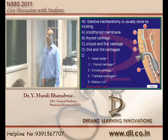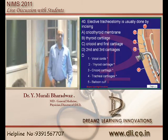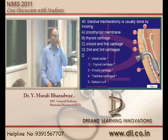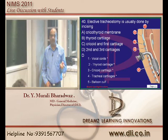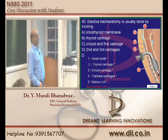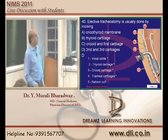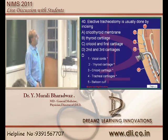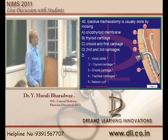Where will you do a tracheostomy? Many questions come on types and complications of tracheostomy. The tracheostomy is performed between the second and third tracheal rings. The structures present are: vocal cords, thyroid cartilage, cricoid cartilage, and then tracheal rings - first, second, and third. Between the second and third tracheal ring is where you will be passing.